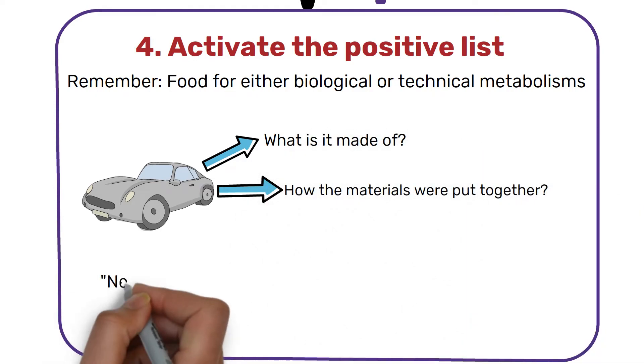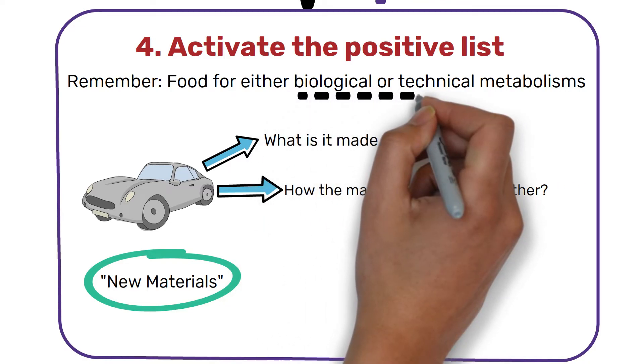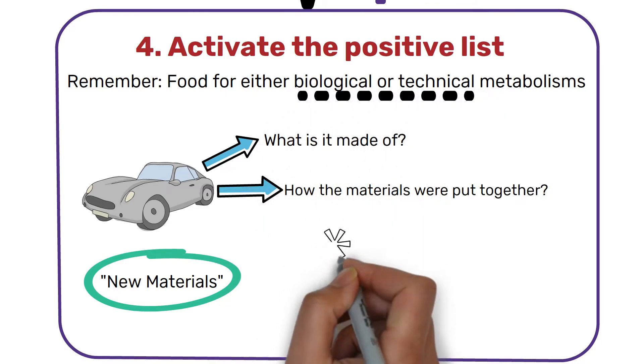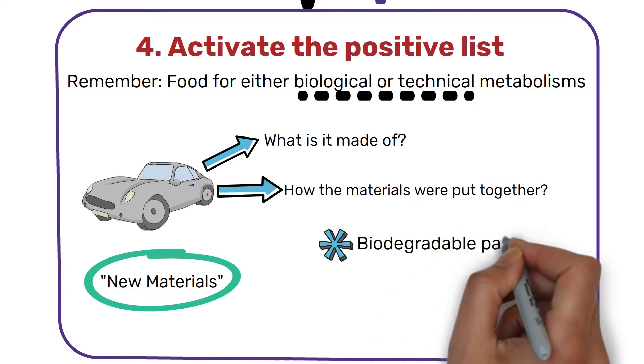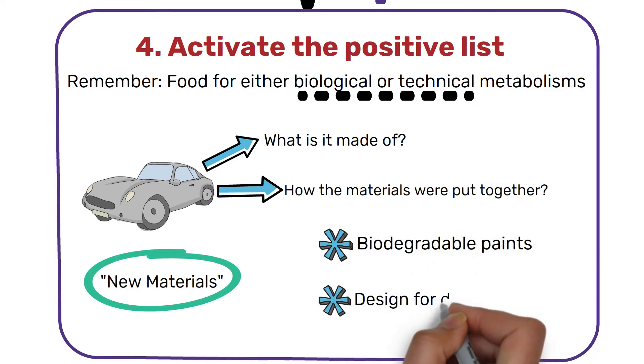If we are choosing new materials, for example, for the brake pads or rubber for the tires, we have to think about how they can enter biological and technical cycles safely. We have to use biodegradable paints and design the car for disassembly so that the steel, plastic, and other technical nutrients can once again be available to industry.